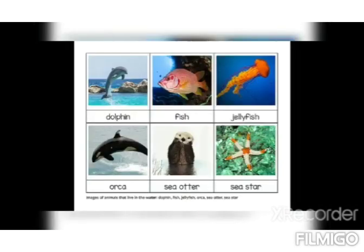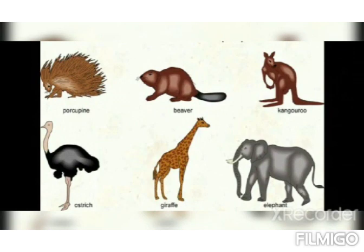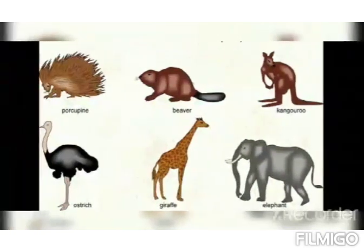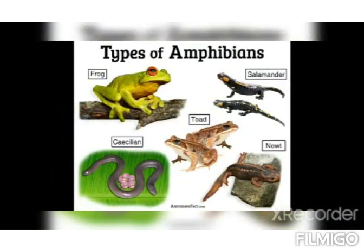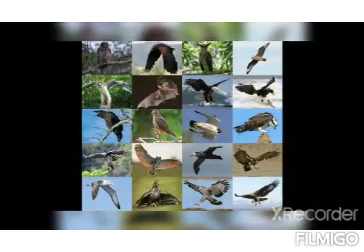The world is full of a variety of animals. Aquatic means the animals which live in water. Terrestrial means the animals which live on land. Amphibians means animals which live on land as well as in water. Reptilian means animals which crawl — for example snakes, lizards, turtle, and alligator. Aerial means birds flying in the sky.